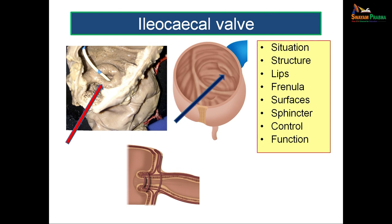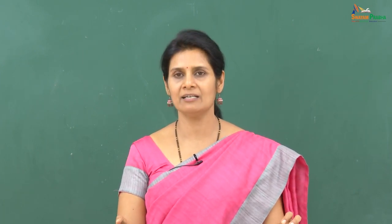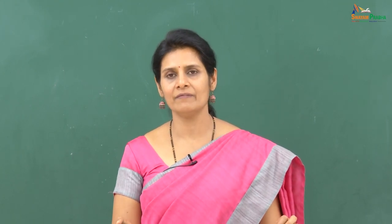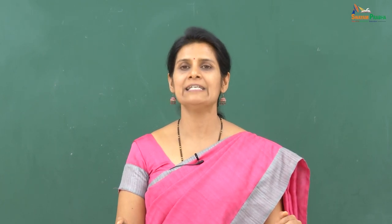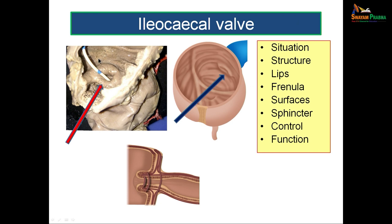The sphincter of the ileocecal valve is formed mainly by thickening of the circular smooth muscle fibers of the muscularis externa. It is controlled passively by distension of the cecum (which closes the sphincter) and actively by the sympathetic nervous system. The function of the ileocecal valve is to prevent reflux of cecal contents back into the ileum, and to delay passage of contents from the ileum to the cecum — it opens only towards the cecum.